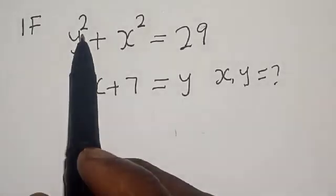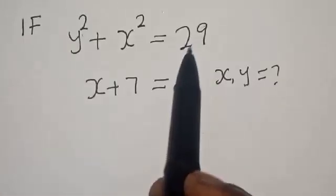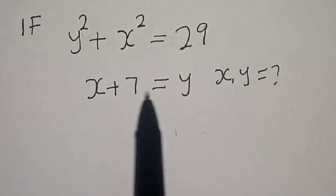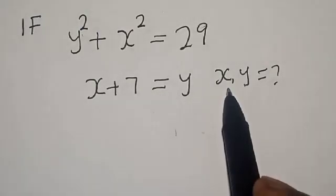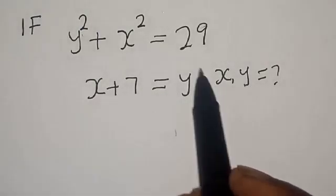If y squared plus x squared is equal to 29, and x plus 7 is equal to y, what is the value of x and y?